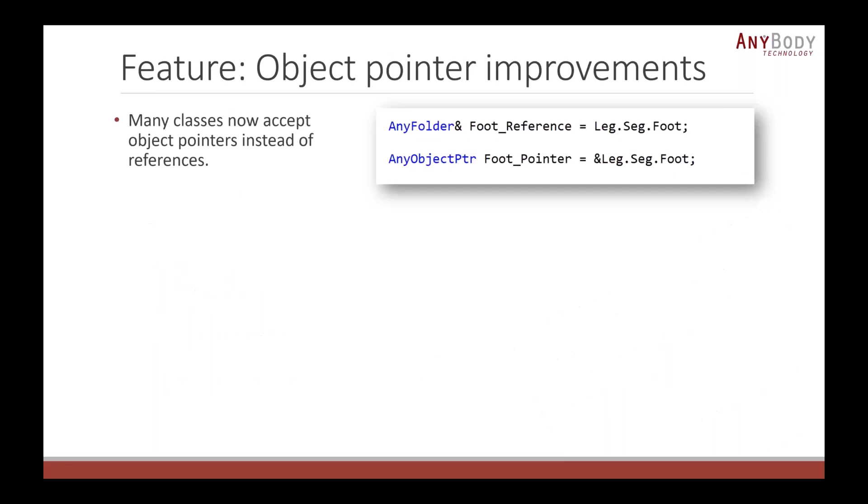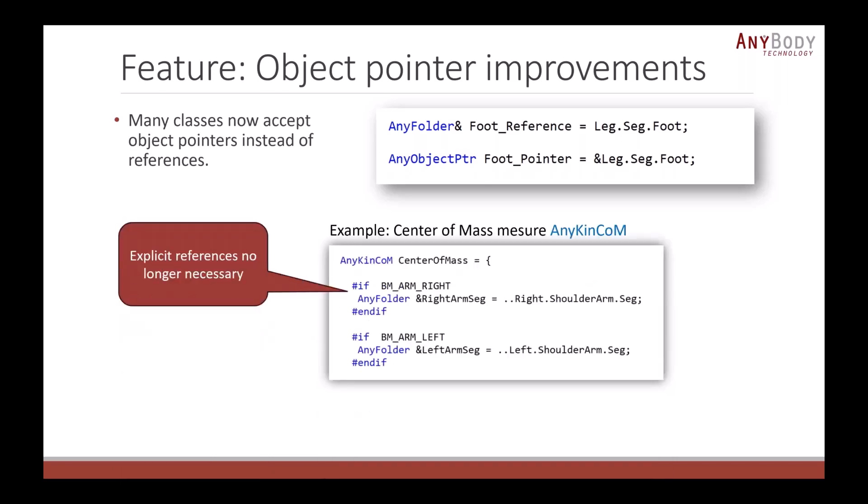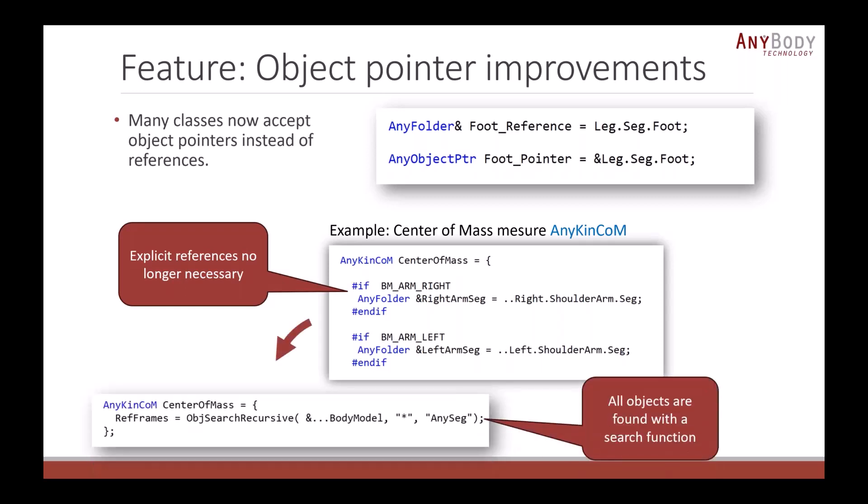Another new feature is improvements to object pointers. Many classes now accept object pointers as input instead of references. A reference is almost like the object itself, more heavyweight, where pointers are much more lightweight. An example is this class to measure the center of mass. Before it had to have references to all the parts that it should include. This could be difficult because the model can be configured in all kinds of ways and you can't really make references to objects that don't exist. But in AnyBody 8 we can now simply supply it with pointers to the objects we want to include. We can find all of these segments with a simple search function.